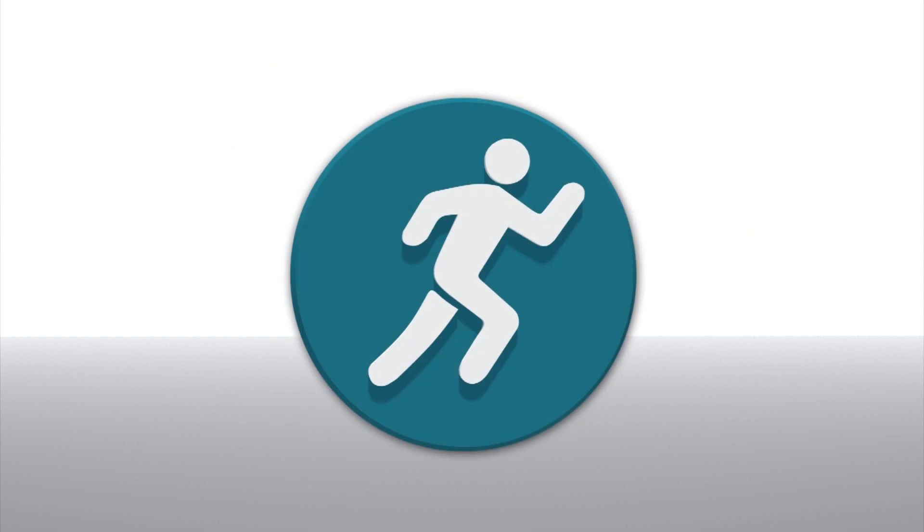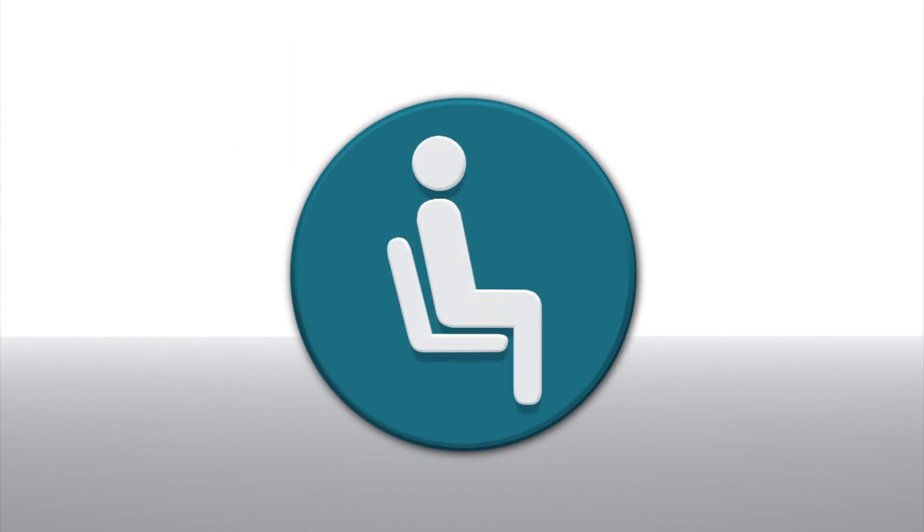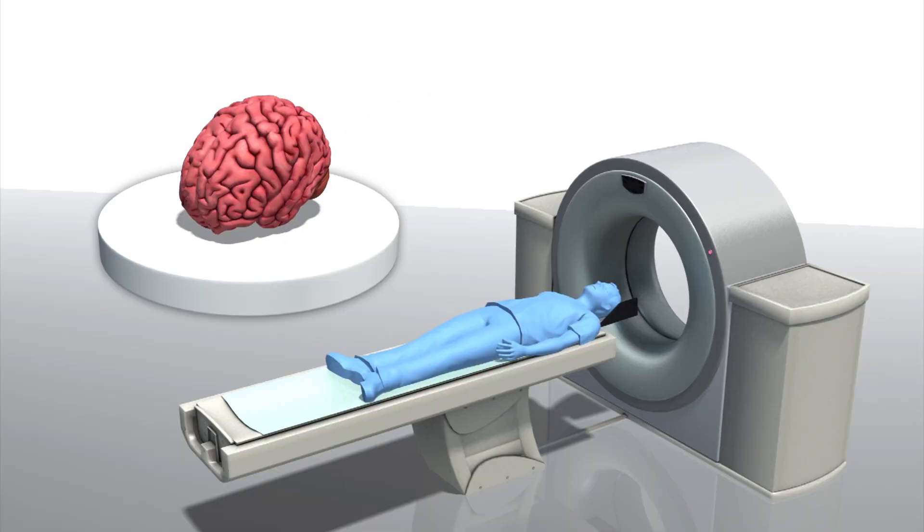The UCLA team found 35 people ranging in age from 45 to 75 and asked about their physical activity levels and the average number of hours per day spent sitting the week before. An MRI scan was taken of each subject's medial temporal lobe.